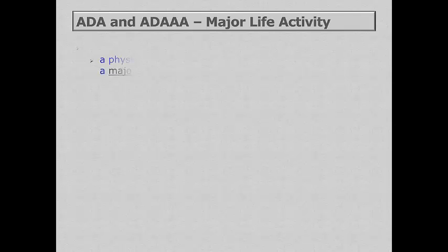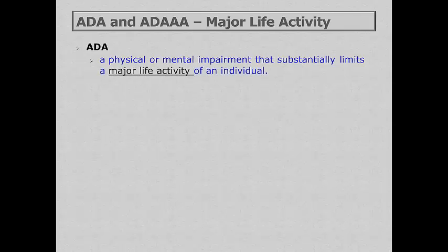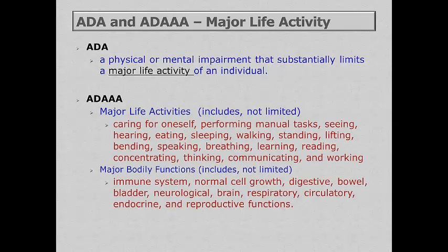Another clause in the ADA talks about major life activities, which was greatly expanded in the amendments. A number of major life activities were specifically stated, such as caring for oneself, sleeping, walking, standing, and learning — though the amendments explicitly state this is not an all-inclusive list. The other major area the Amendments Act addressed was major bodily functions, such as the immune system, the respiratory system, and reproductive functions, which are specifically listed.